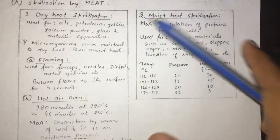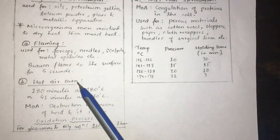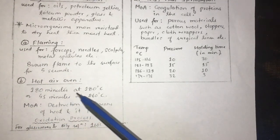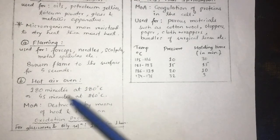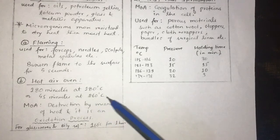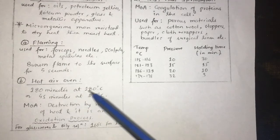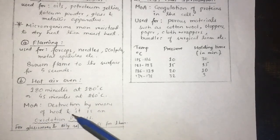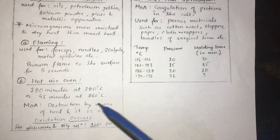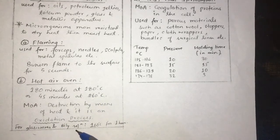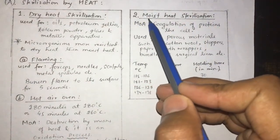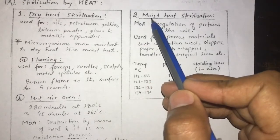The hot air oven is used at 180°C for 30 minutes, or 45 minutes at 160°C, or at 220–260°C for shorter times. The mechanism of action is destruction by heat through an oxidation process. It is used for glassware and oily solutions — typically 160°C for one hour.